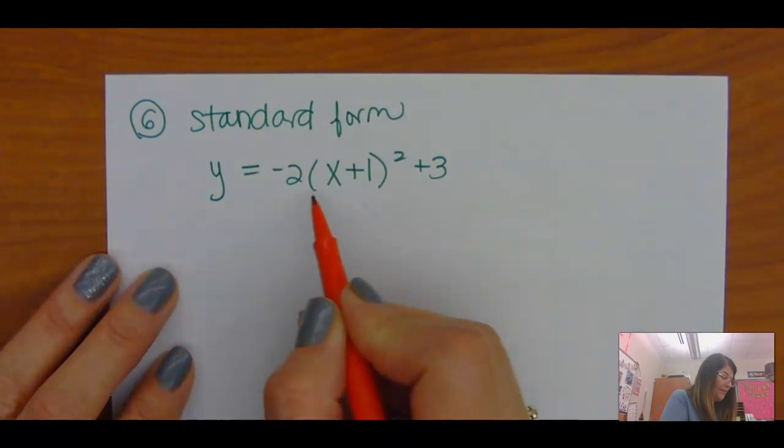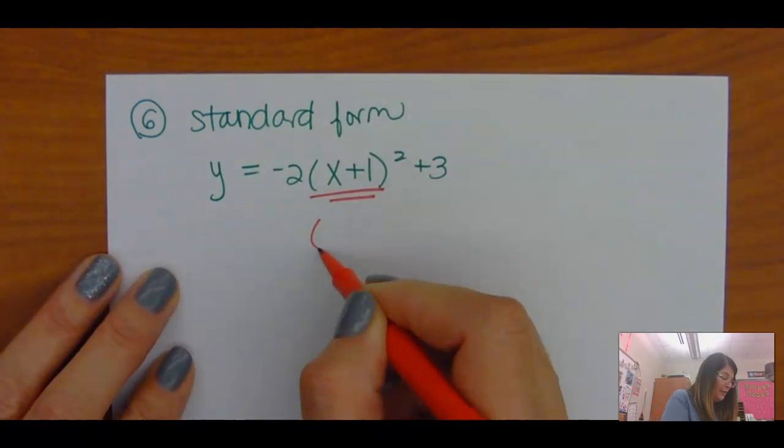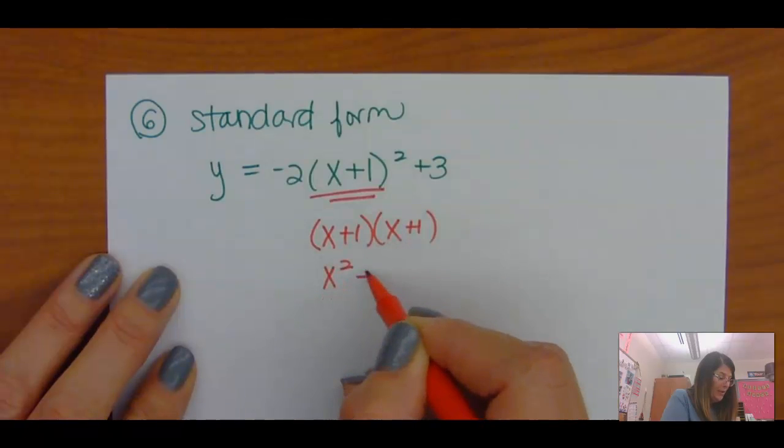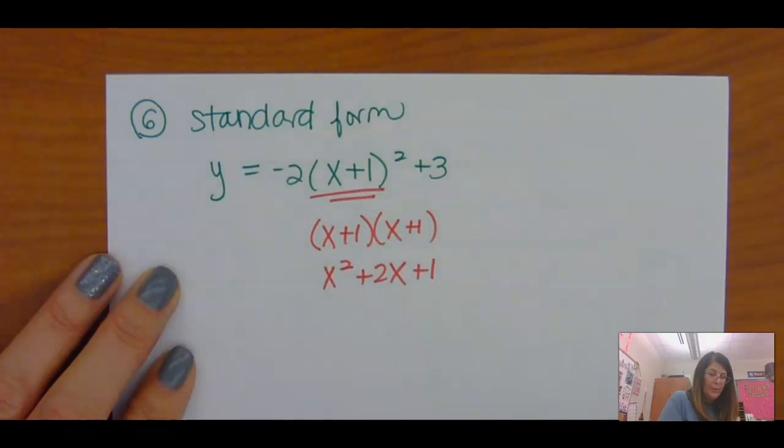So here's what I have to do. I have to FOIL this out for starters. So x plus 1 times x plus 1 is x squared plus 2x plus 1.